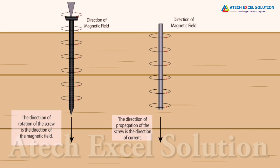If we consider ourselves driving a corkscrew in the direction of the current, then the direction of the corkscrew is the direction of the magnetic field.